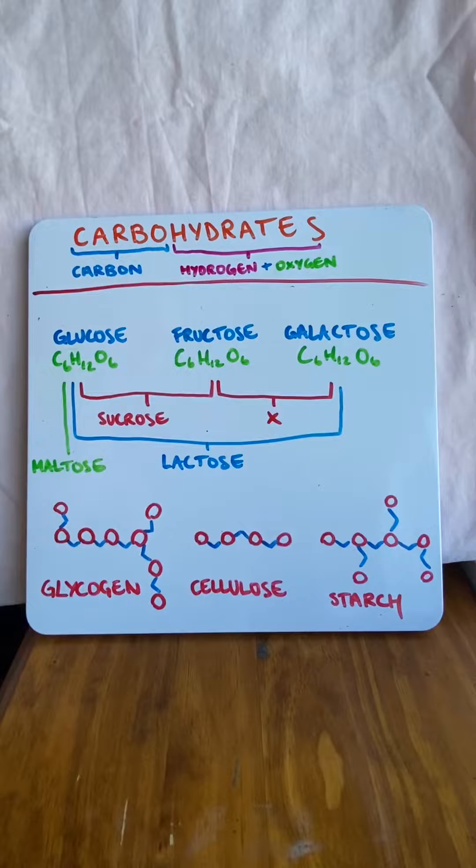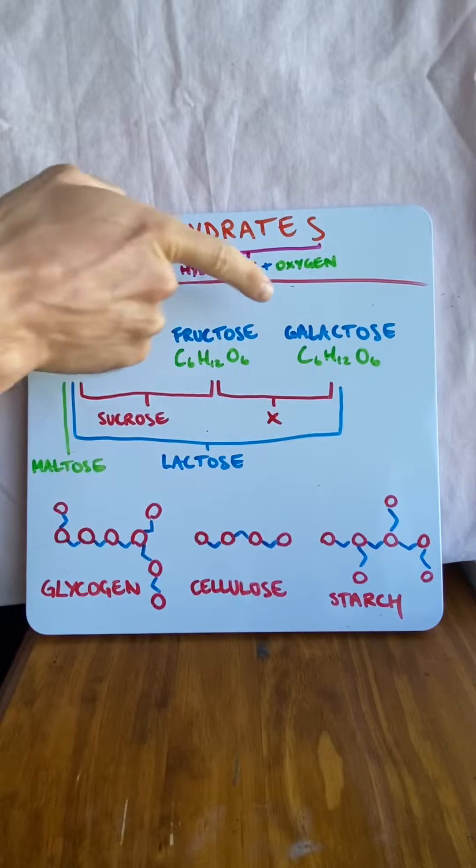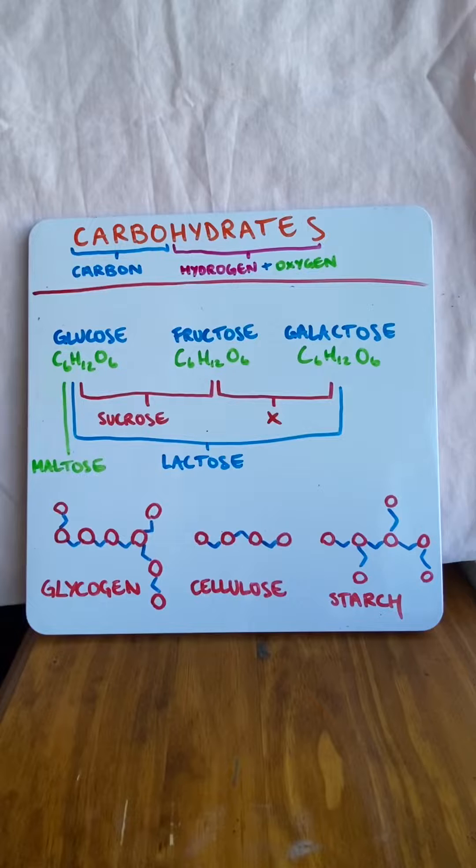Let's first start with the monosaccharides. There are three types: glucose, fructose and galactose. All of them have the same chemical formula, C6H12O6. Now you might say, well, if they've got the same chemical formula, what's the difference? Why do they have different names? It's simply the arrangement of the C6H12O6.